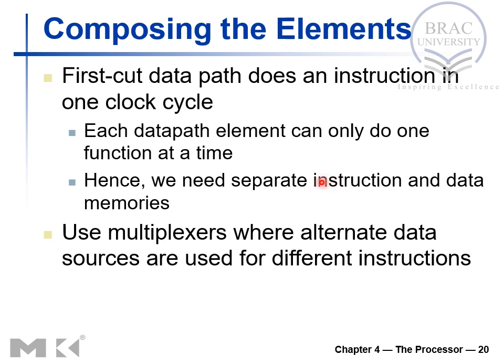We need separate instruction and data memories. Instruction memory is accessed during the fetch operation, while load and store operations use data memory. Although instruction and data memories are assigned to parts of a common RAM, in single cycle data path we need physically separate instruction memory and physically separate data memory. Multiplexers handle alternative data sources for different instructions — for example, ADD uses two register inputs, while ADD-I uses one register input and a sign-extended constant, and the control unit selects which input to pass through.